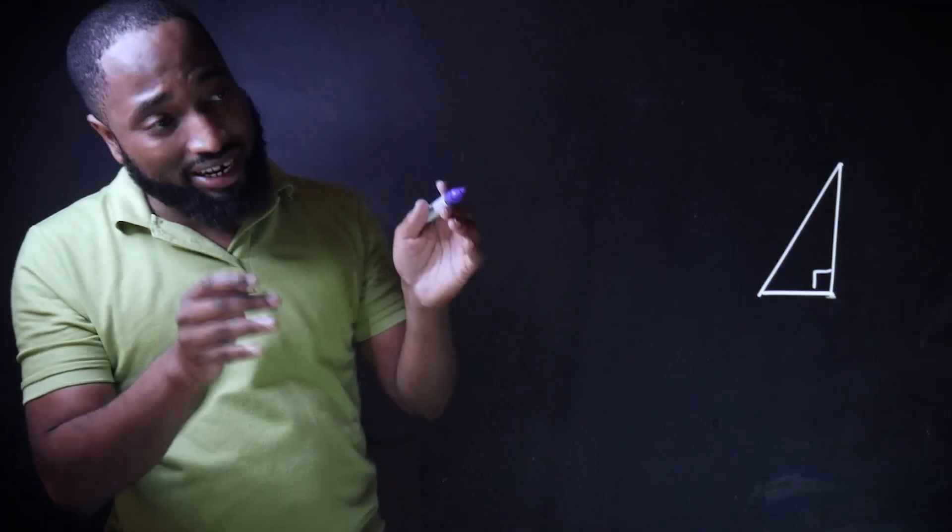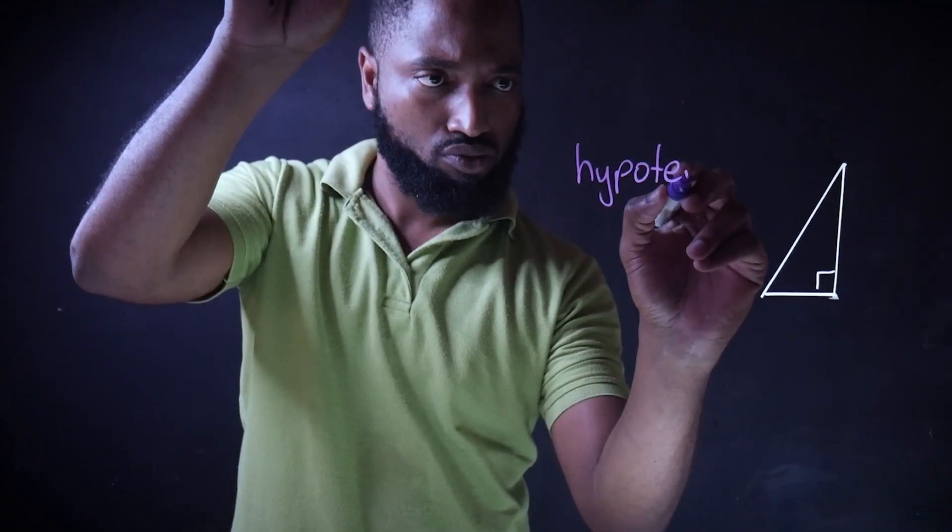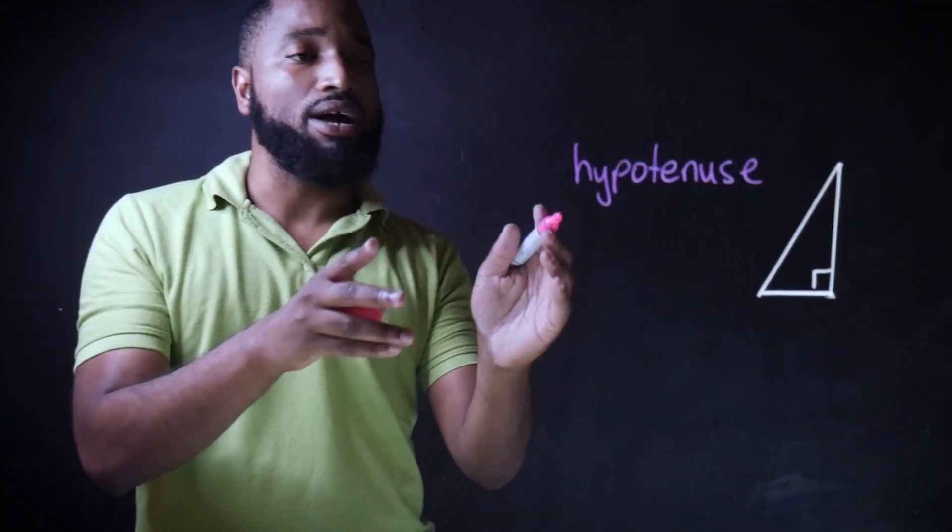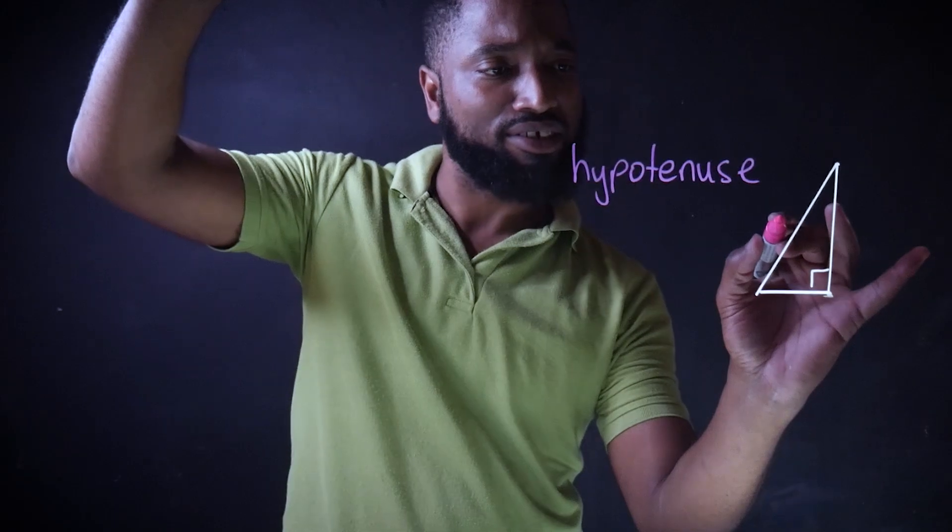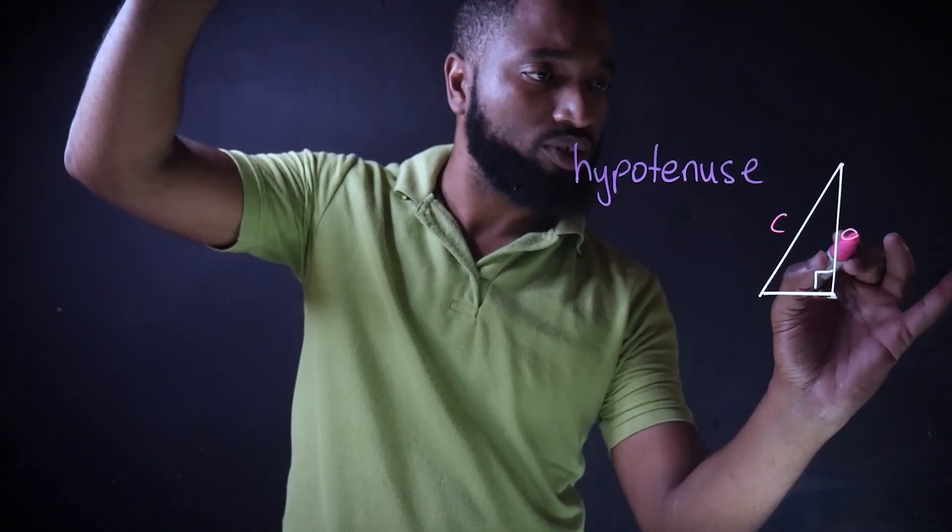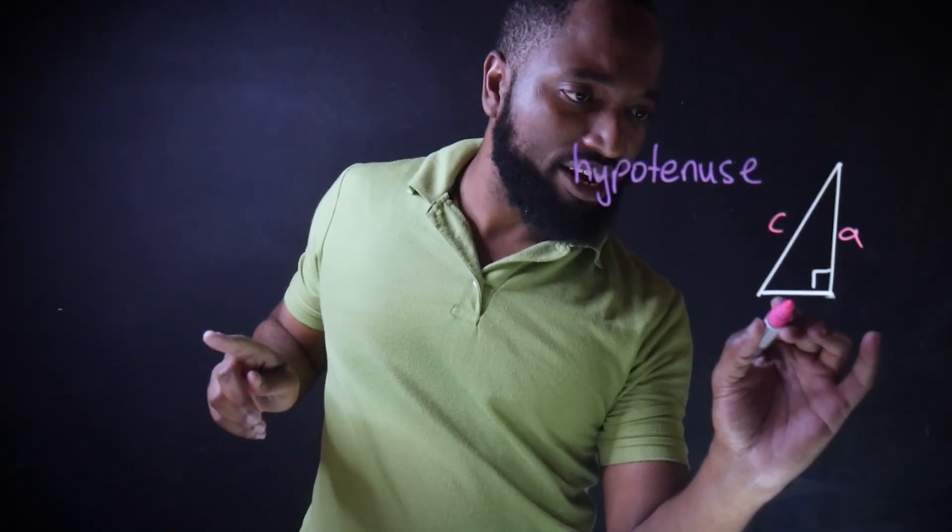The side opposite the right angle is called a hypotenuse, but that went too long so let's just call it C. And we'll call the other two sides A and B.